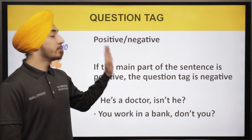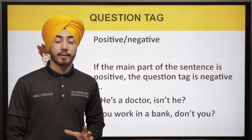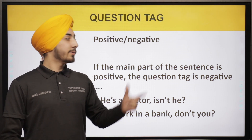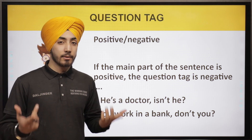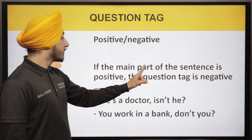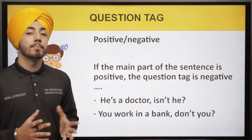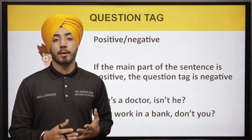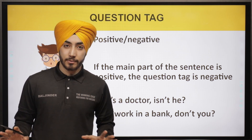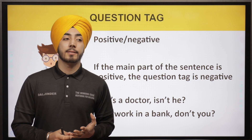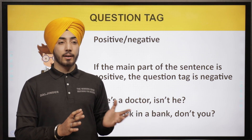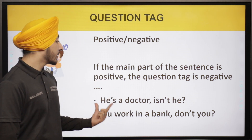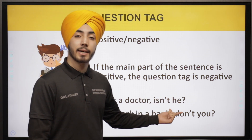There are two types of question tags: one is a positive question tag and the other is a negative question tag. If the main part of the sentence is positive — meaning no words like 'no', 'never', or 'not' are used — the question tag is negative. For example, 'I am going to school' is a positive sentence, while 'I am not going to school' is a negative sentence. So if our sentence is positive, the question tag should be negative.